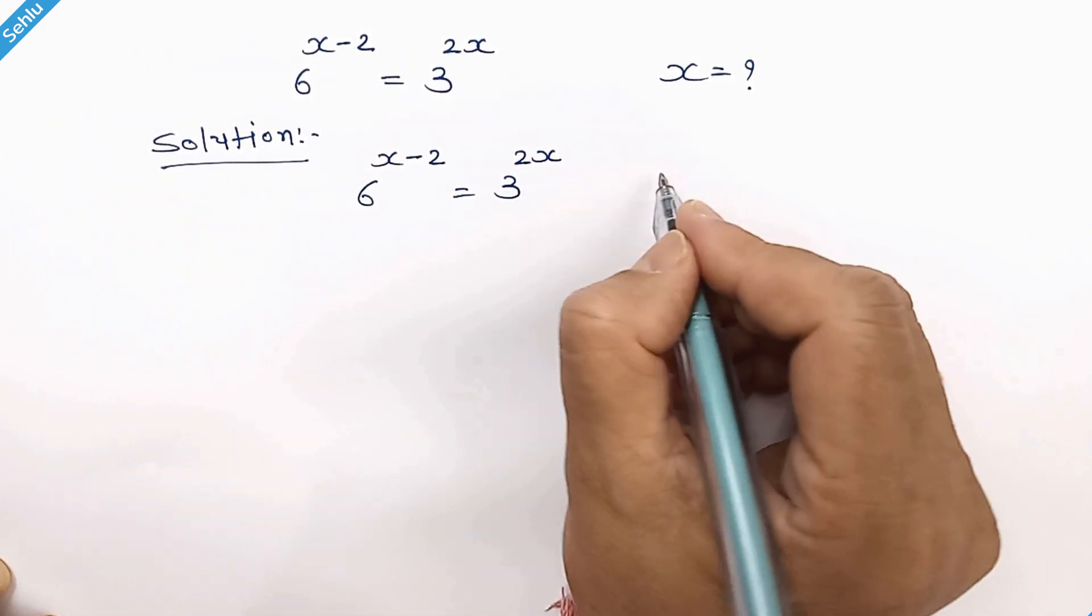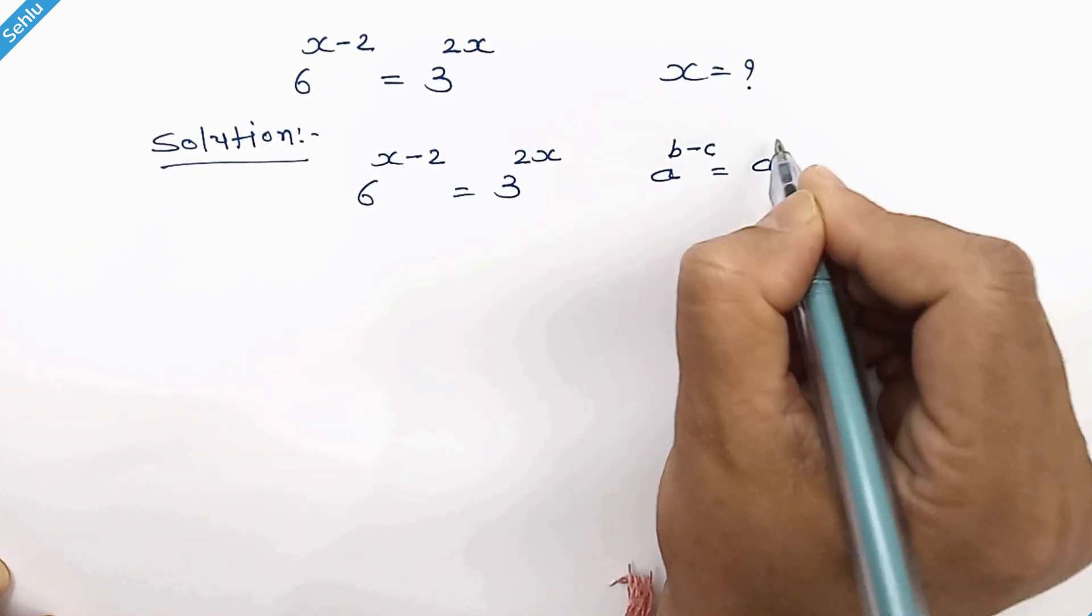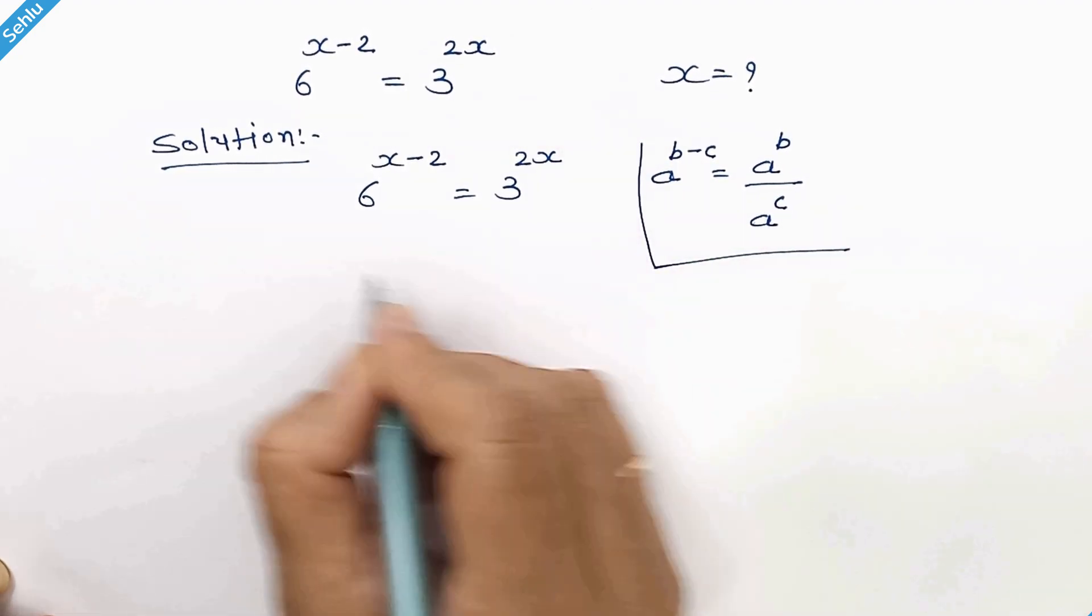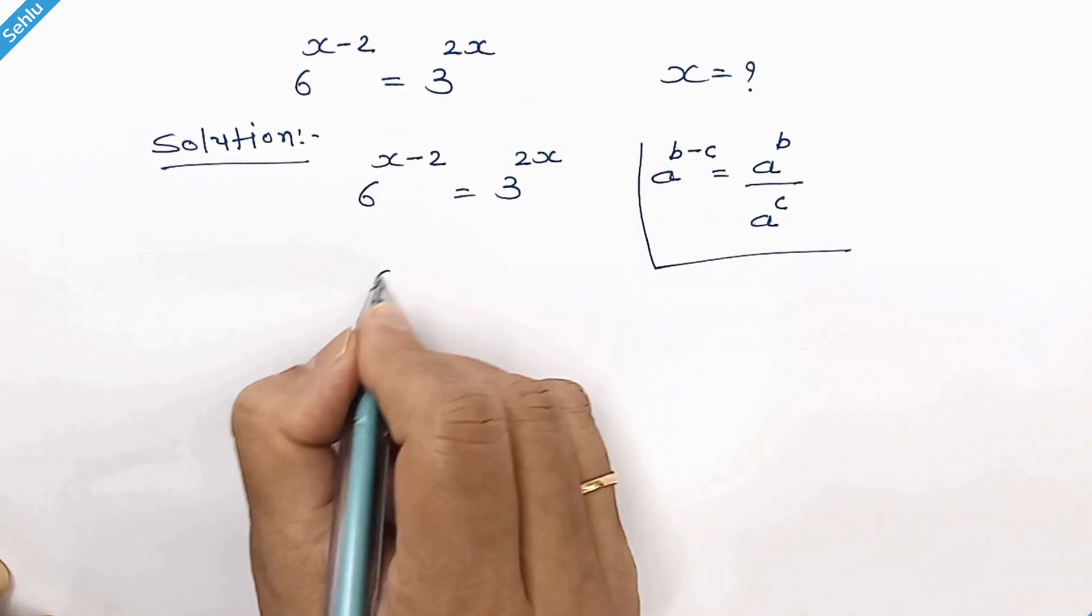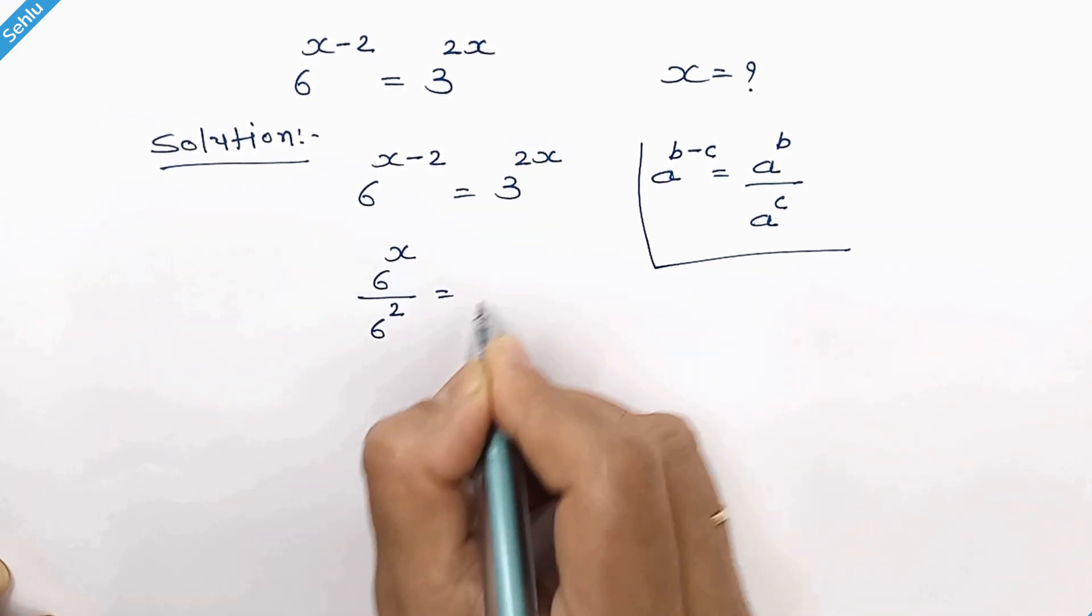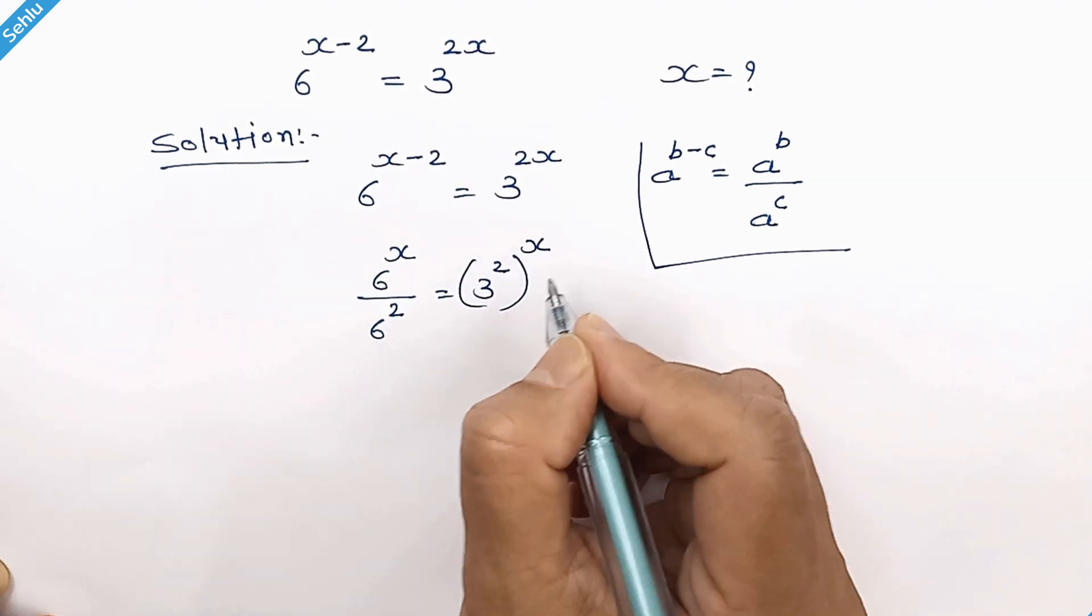In the first step, we will apply a rule: when we have a to the power b minus c, it can be written as a to the power b over a to the power c. According to this rule, this part can be written as 6 to the power x over 6 square. And here we can write 3 square whole to the power x.